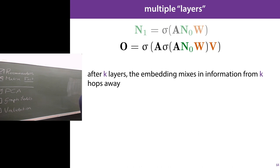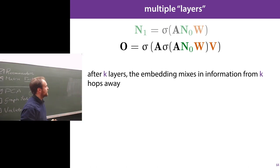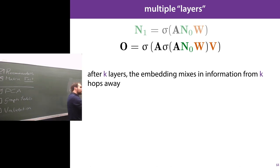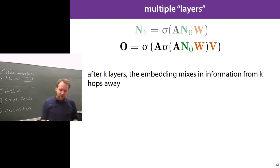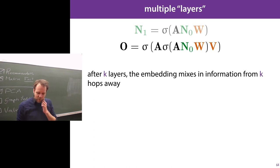You can do multiple layers: take the result N1, pass it through another graph convolution, and so on. The more layers you do, the more deeply you look into the graph for your new representations. After k layers, the embedding mixes information from k hops away from the original node — the more layers you add, the more you're mixing from further away in the graph.